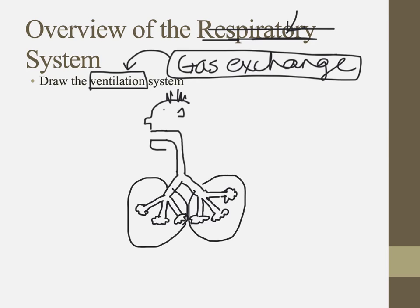Right underneath the lungs is a big muscle called the diaphragm. The diaphragm separates your chest cavity from your abdominal cavity and does some other really important things.